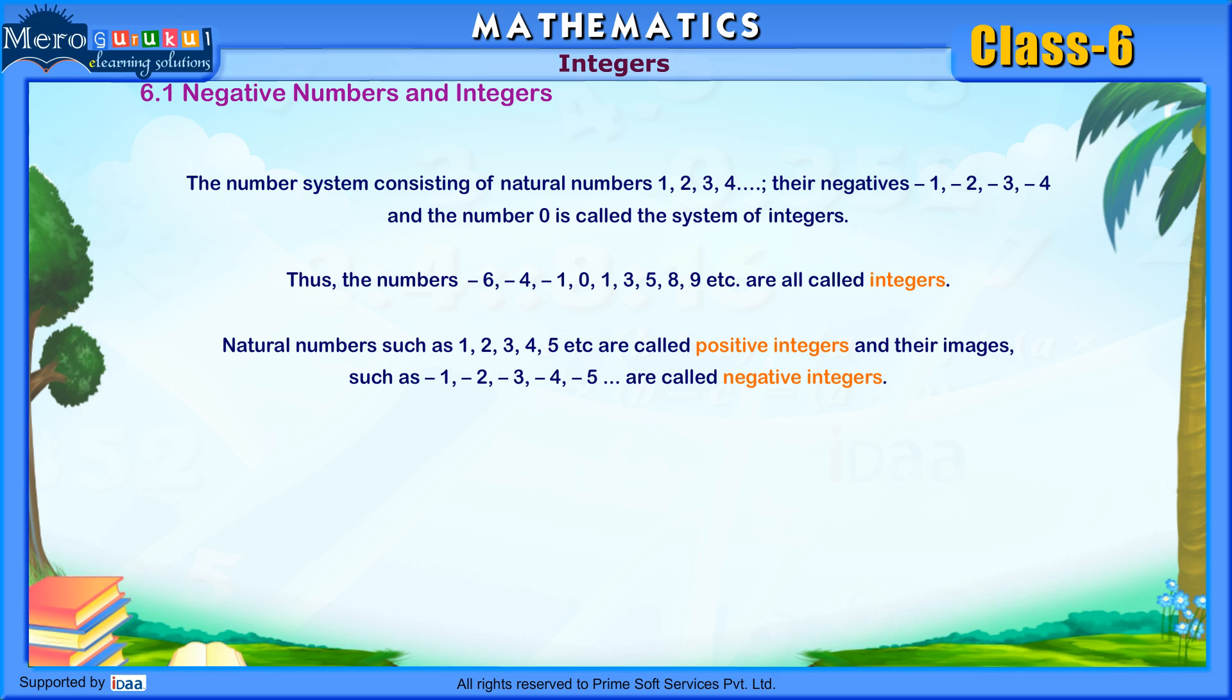Natural numbers such as 1, 2, 3, 4, 5, etc. are called positive integers, and their images such as minus 1, minus 2, minus 3, minus 4, minus 5, and so on are called negative integers. Zero is neither a positive nor a negative integer. We simply name zero as integer.